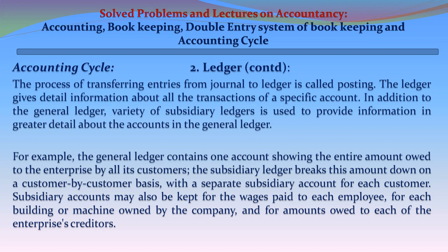In addition to the general ledger, a variety of subsidiary ledgers is used to provide more detailed information. For example, the general ledger contains one account showing the entire amount owed by all customers, while the subsidiary ledger breaks this down on a customer-by-customer basis. Subsidiary accounts may also be kept for wages paid to each employee, for each building or machine owned by the company, and for amounts owed to each of the enterprise's creditors.